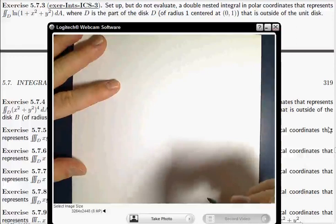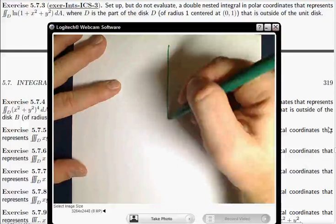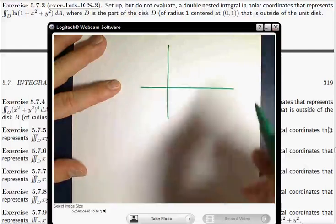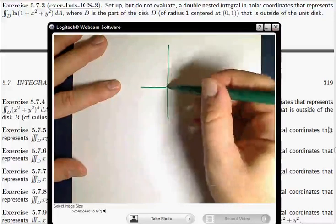The part of the disk of radius 1 centered at (0,1). So here's (0,1). Here's the disk of radius 1 centered there.